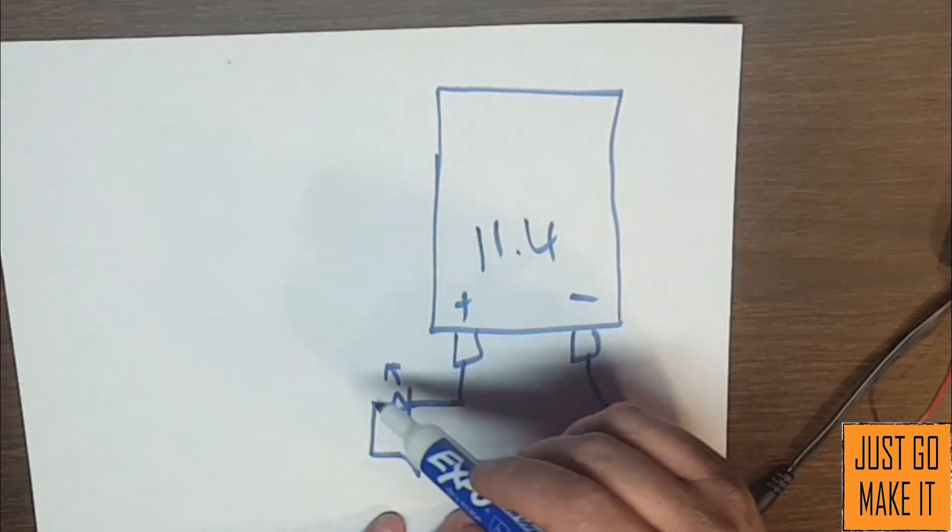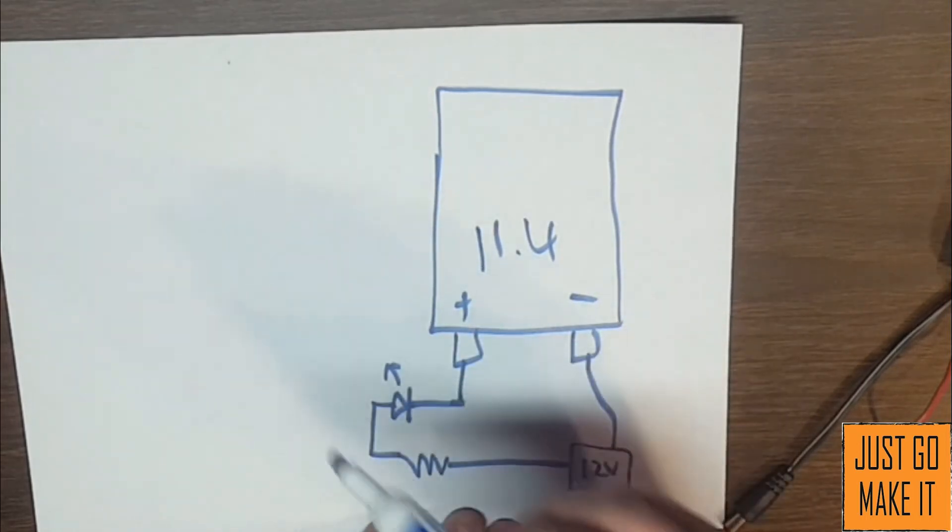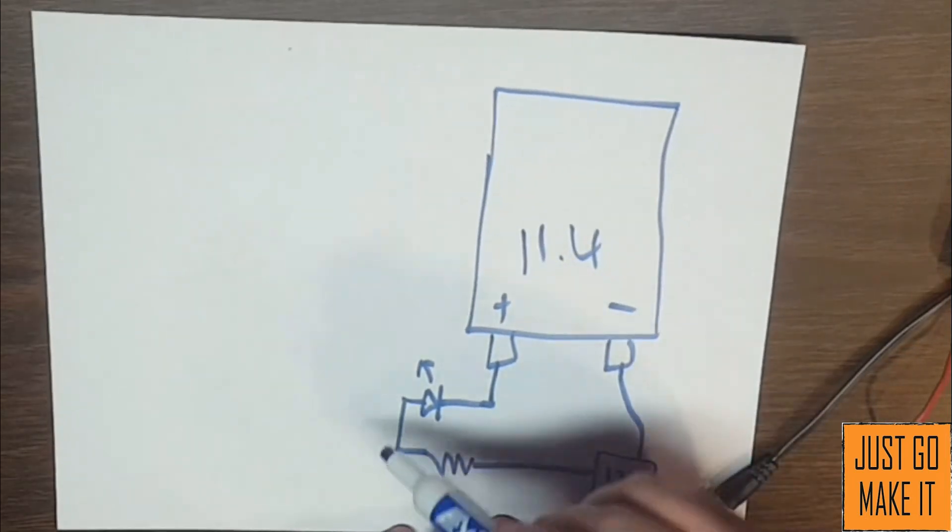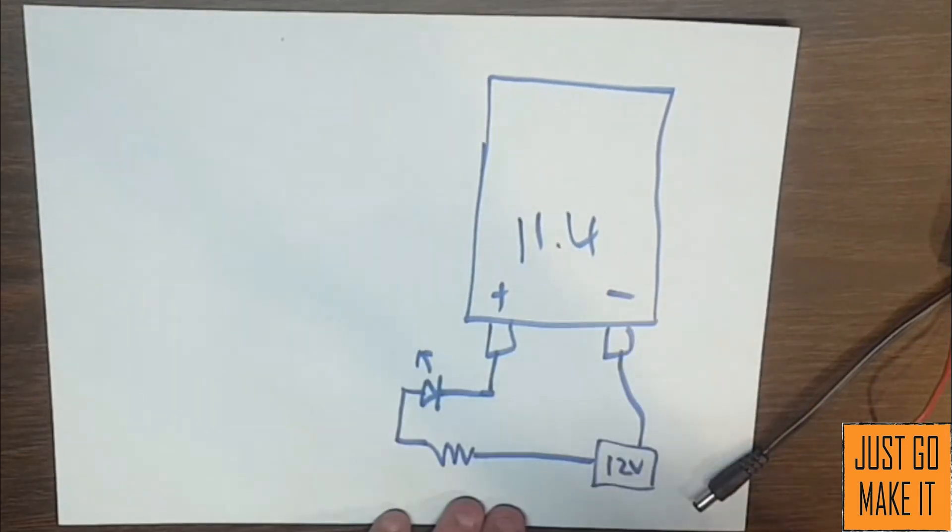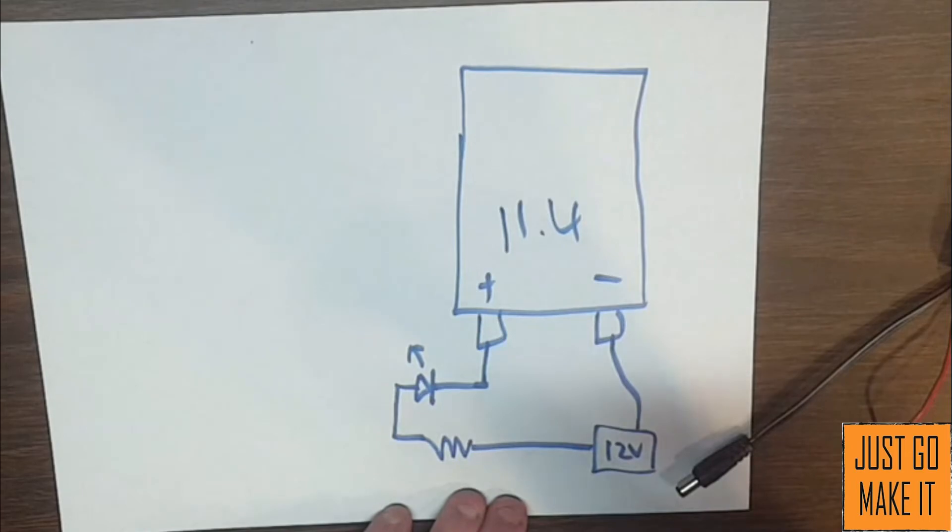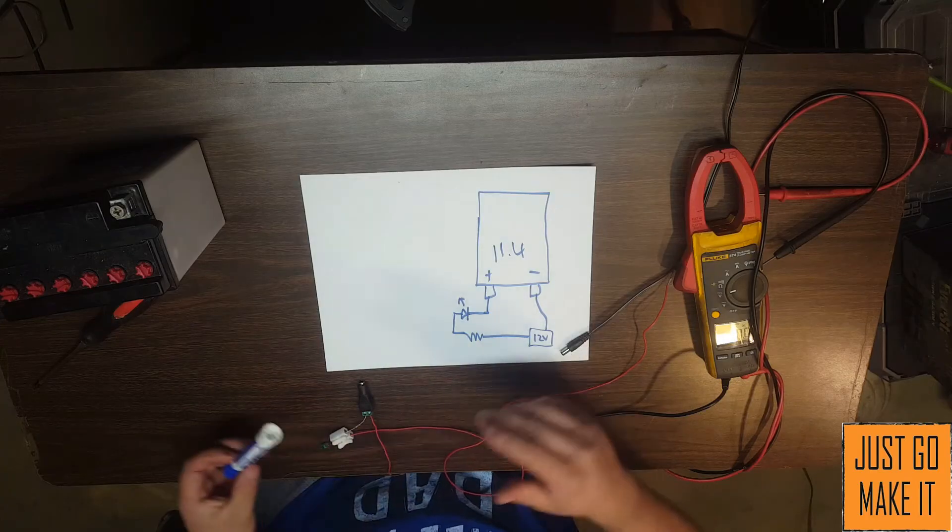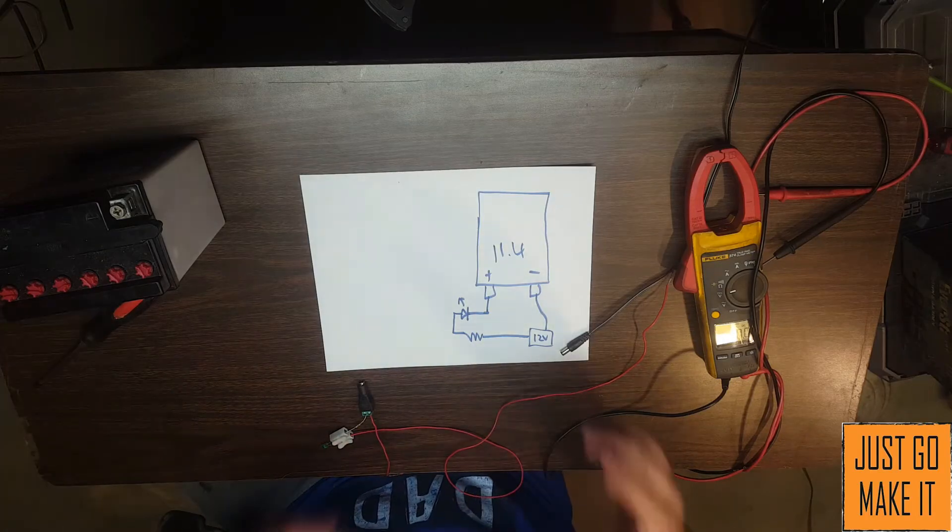Because then the voltage on each side of the LED is exactly the same, instead of having 12 volts on one side and say as of right now 11.4 volts on the battery side. So hopefully that makes some sense.